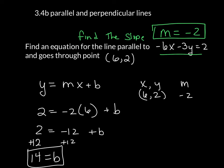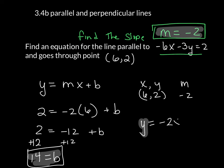I know what the slope is. The slope is negative 2. My b is 14. So my equation of the line is y equals negative 2x plus 14.